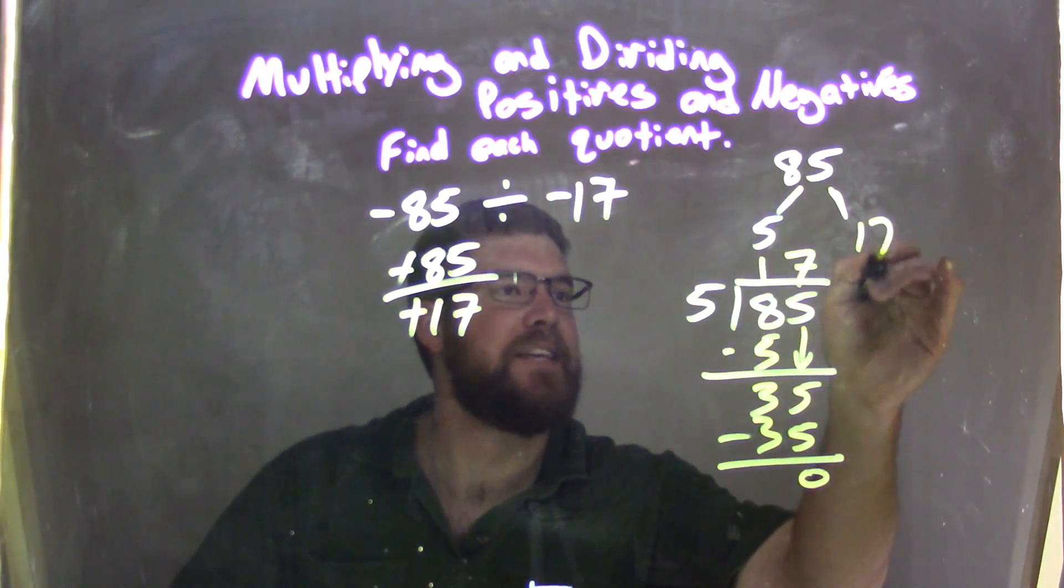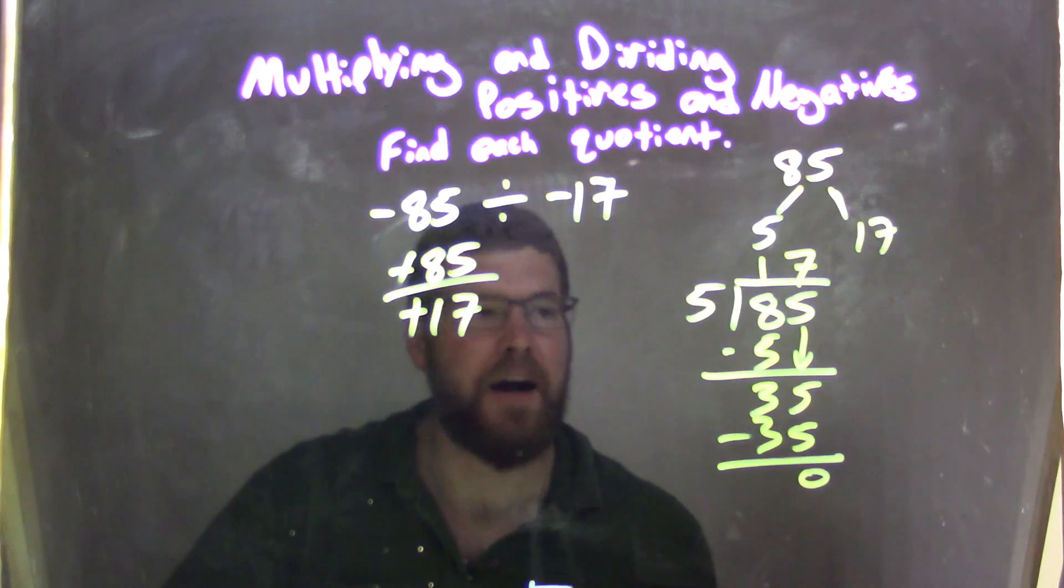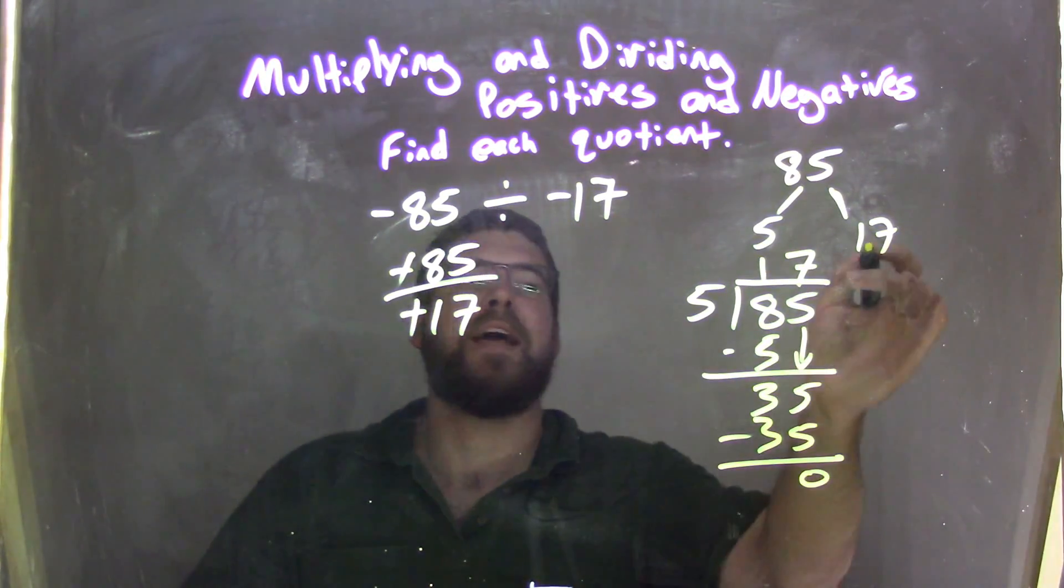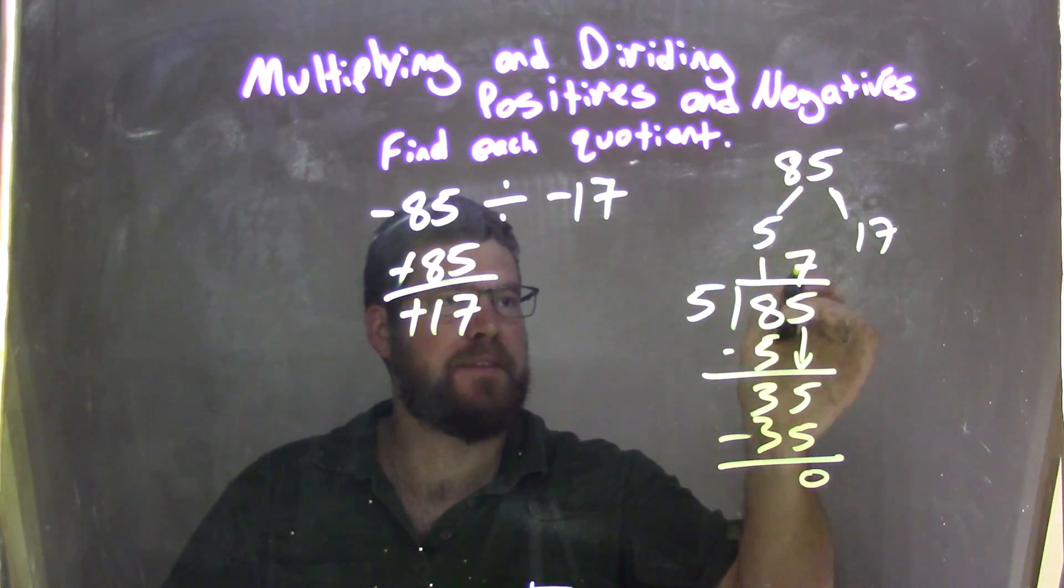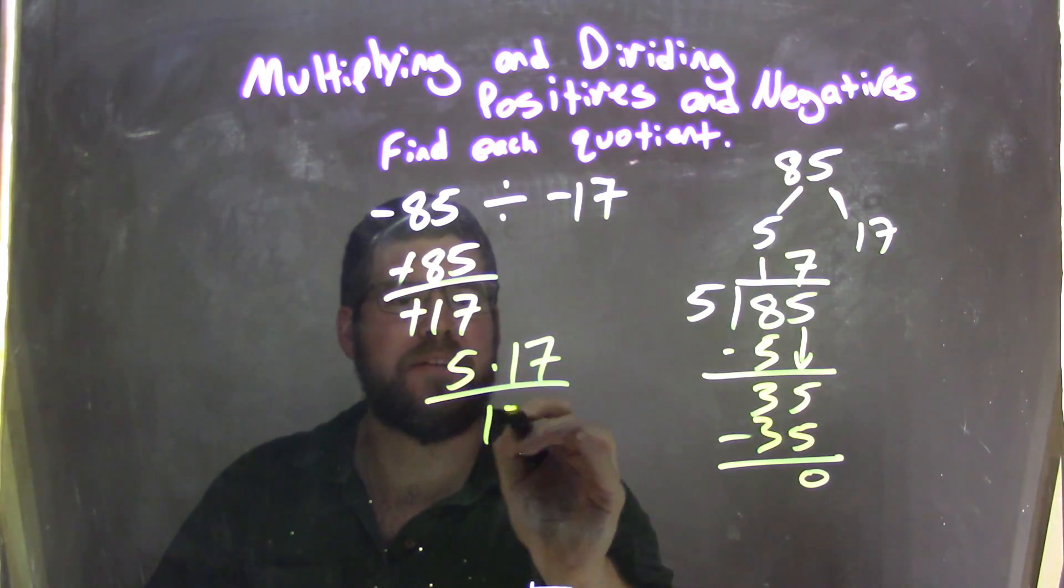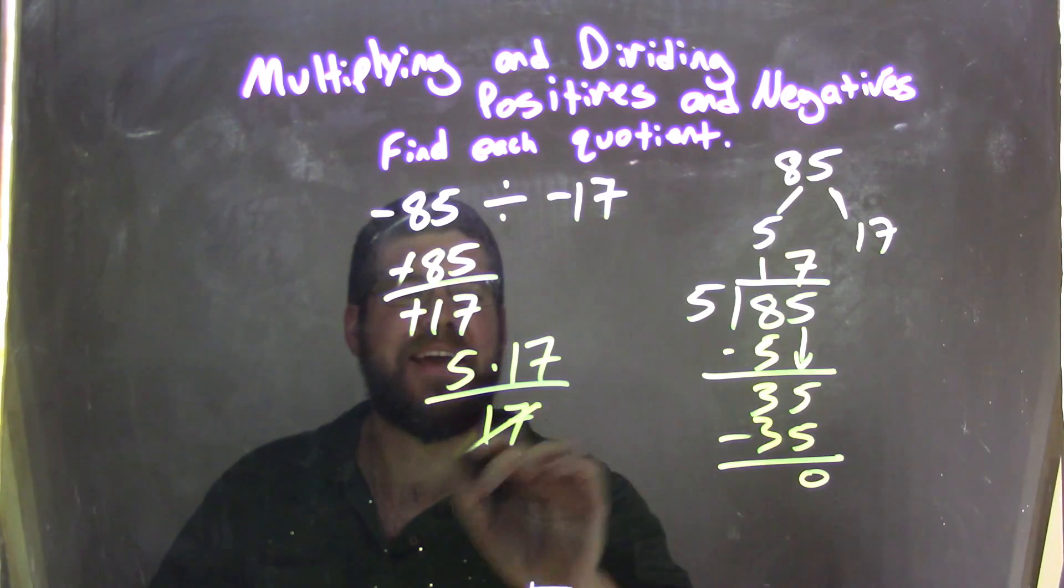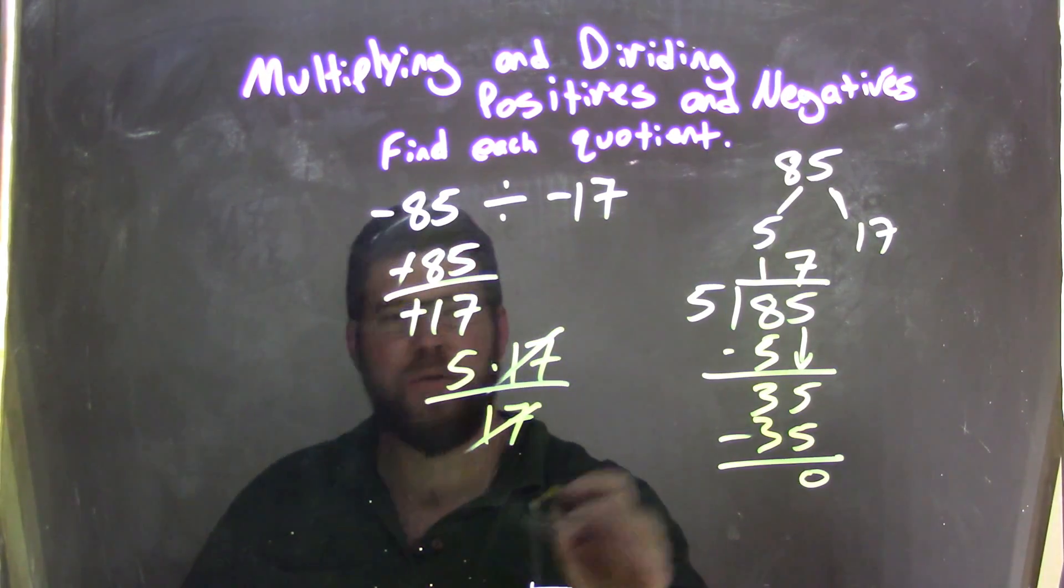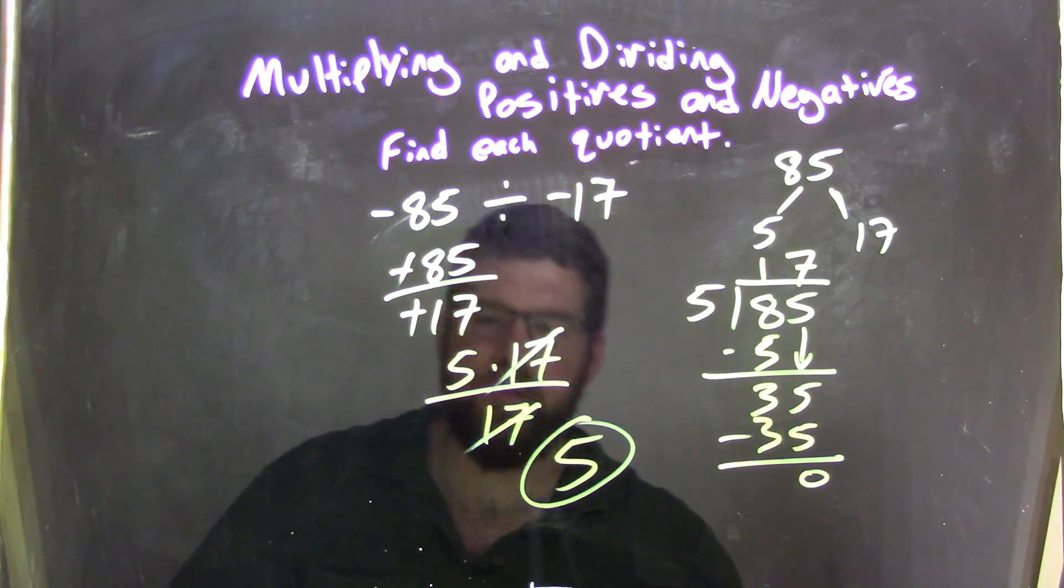So 5 times 17 is 85. Well, I can't break down 17 anymore, so 85 is 5 times 17, which works out great because now we just have 17 in the denominator. They cancel, the 17's cancel, and now I'm left with 5 as our final answer.